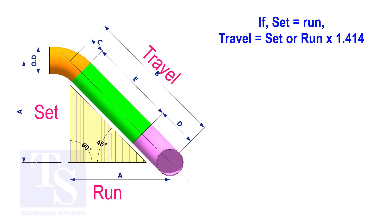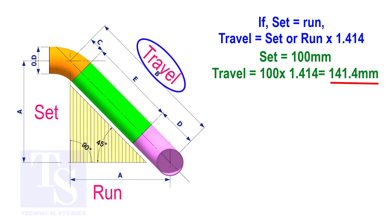Assume that the value of the set is 100. The value of the travel is 100 multiplied by 1.414 equals 141.4.